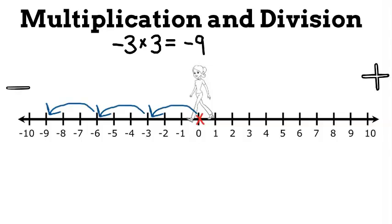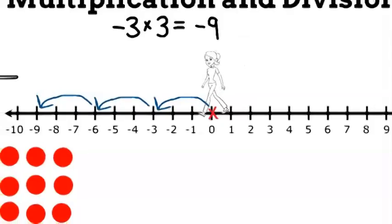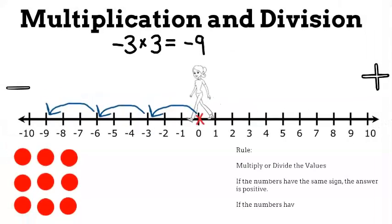If we look at the black and red chips, we want three negatives, so red chips, and we want three sets of them. That gives us nine red chips, which is negative 9. And the rules for multiplying and dividing are: if numbers have the same sign, the answer is positive. If numbers have different signs, the answer is negative. And you multiply or divide just the same.